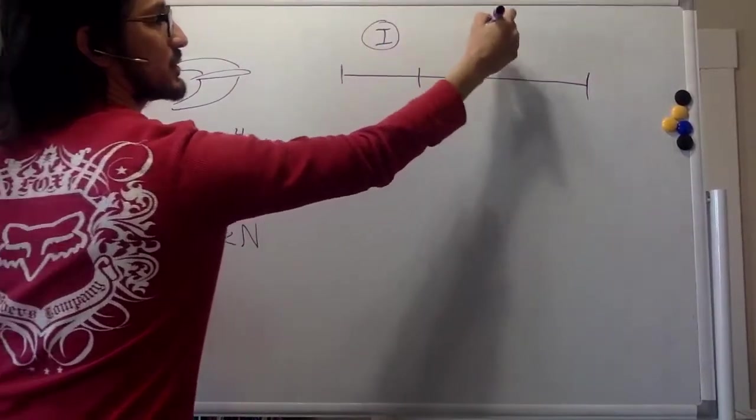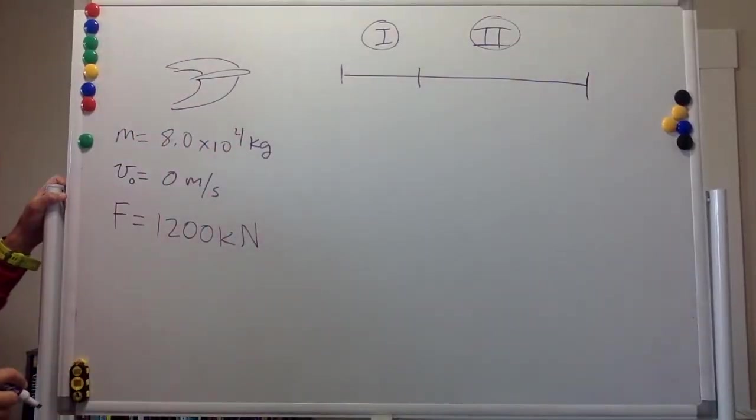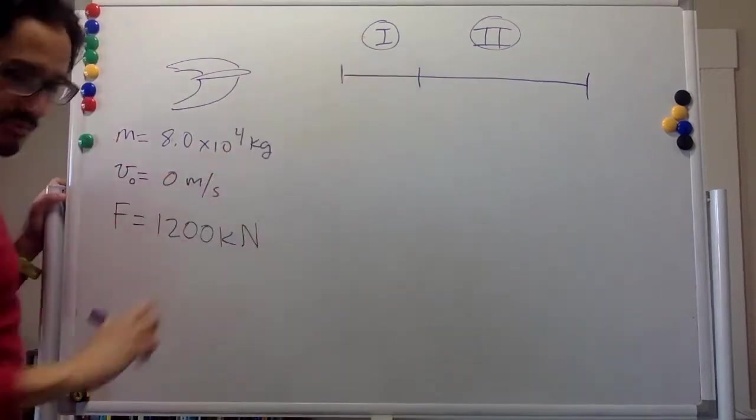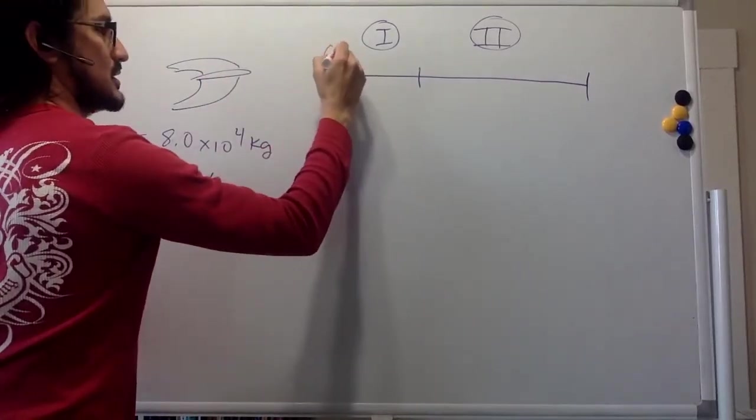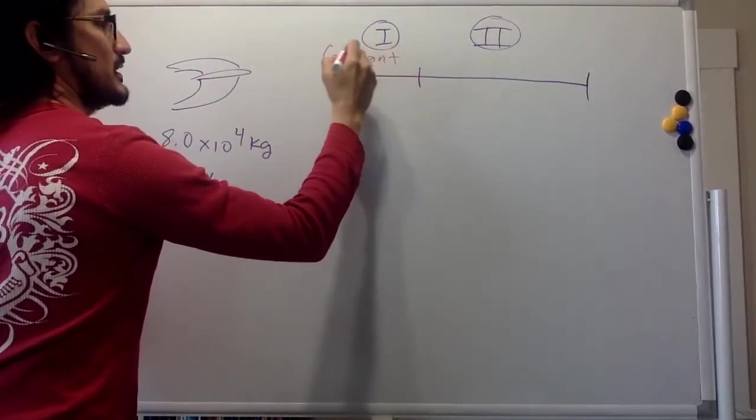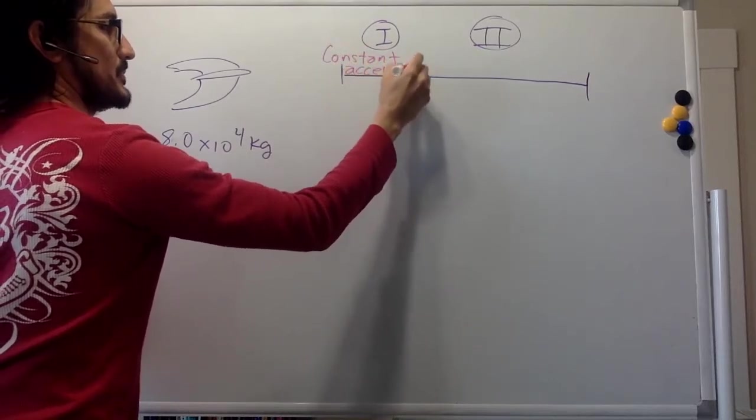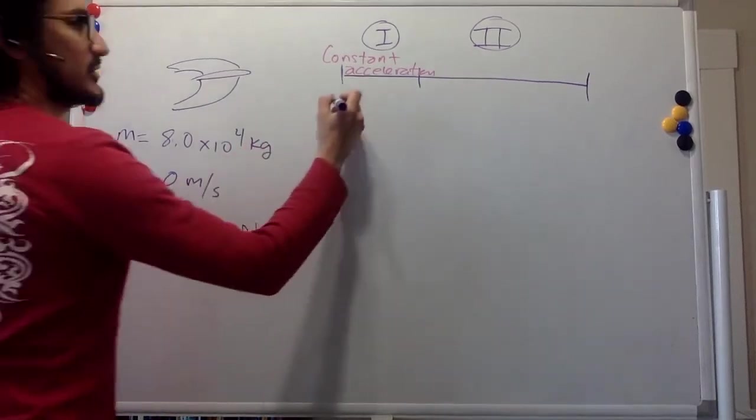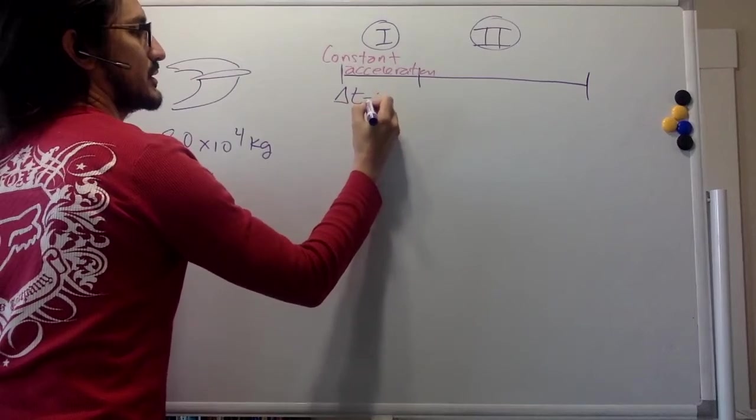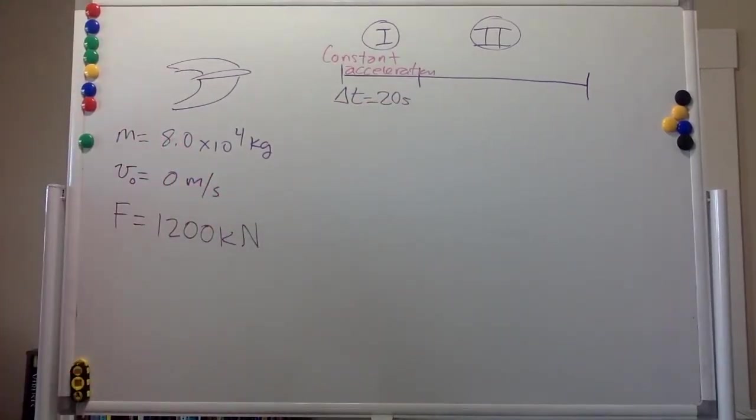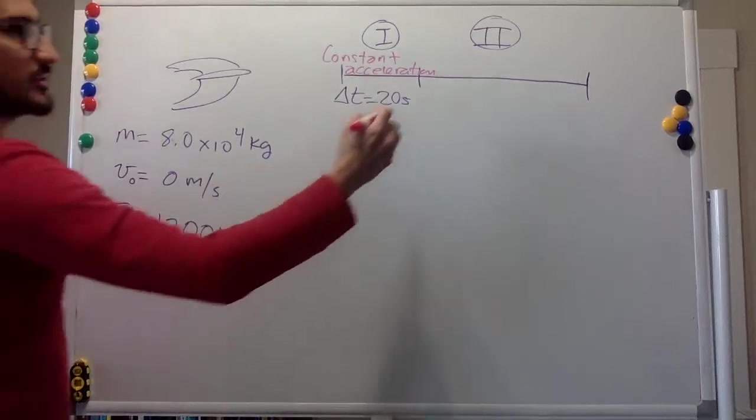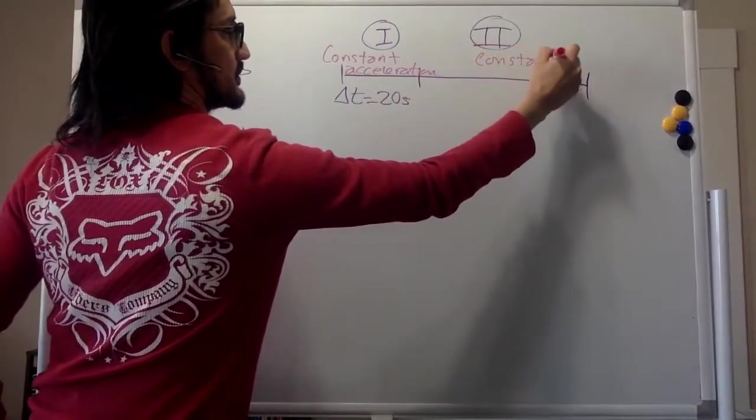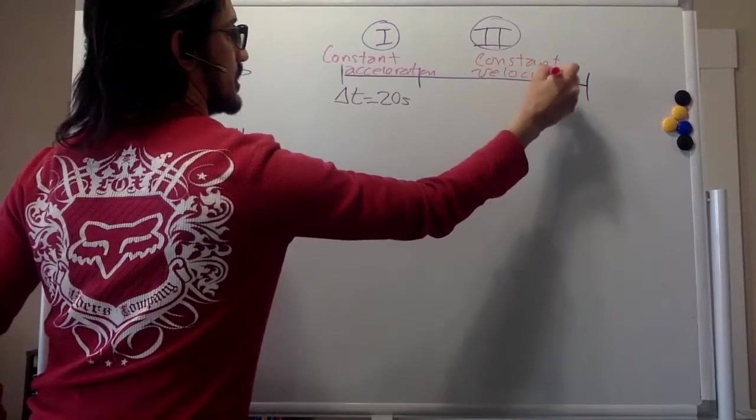This is section 1 of the problem. This is section 2 of the problem. So in the first section, there is constant acceleration, and that section lasts 20 seconds. In the second section, there is no acceleration anymore, so it's constant velocity.